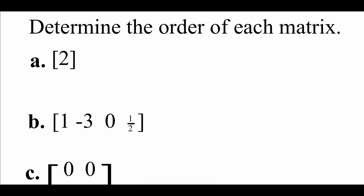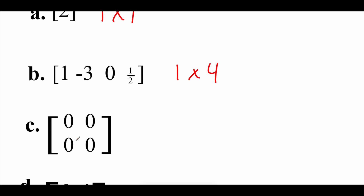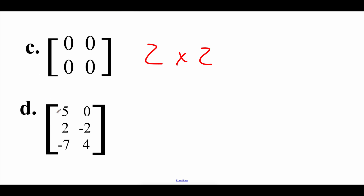So the first thing we're looking at is figuring out the order of some different matrices. Looking at the first one, there's only one entry, so we've got one row and one column — this is a 1 by 1 matrix. In letter B, we've got one row and four columns, so this would be a 1 by 4 row matrix. For letter C, we've got two rows and two columns, so this is a 2 by 2 square matrix. And our last one has three rows and two columns, so this is a 3 by 2 matrix.